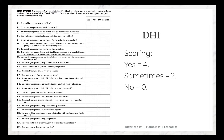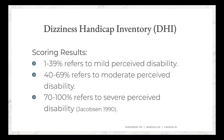When scoring, every yes is worth four points, every sometimes is two points, and every no is zero. The total score ranges as follows: a score of zero means no perceived disability. A score between one and 39 refers to mild perceived disability. A score between 40 and 69 refers to moderate perceived disability. And a score of 70 or higher refers to severe perceived disability as a result of the dizziness.